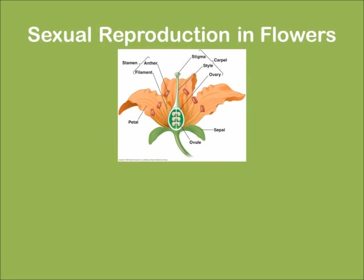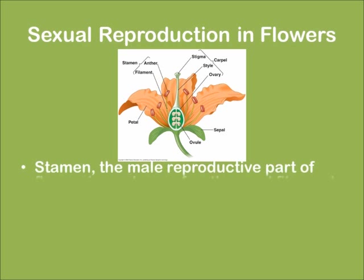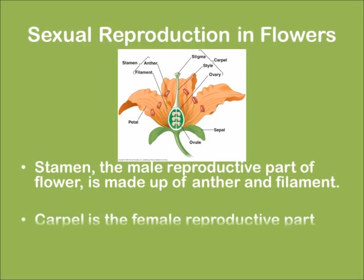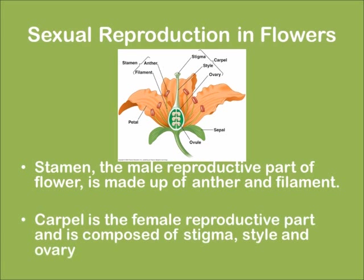Sexual reproduction in flowers: the stamen is the male reproductive part of the flower, made up of the anther and the filament. The carpel is the female reproductive part and is composed of the stigma, style, and ovary.